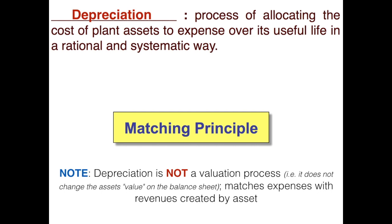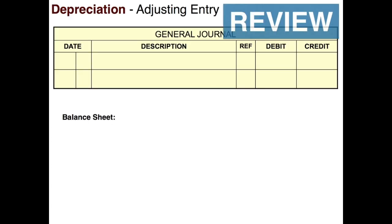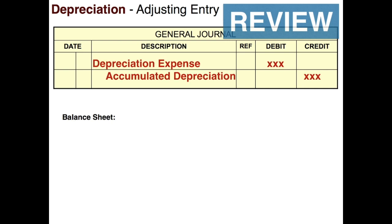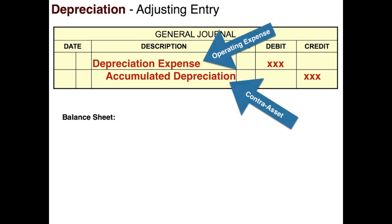Keep in mind that depreciation is not a valuation process — it doesn't actually change the asset's value on the balance sheet. Assets are kept on the books at what we paid for them; we don't adjust their value based on fair market value. The use of depreciation methods matches the expense with the revenue created by the asset. When we record depreciation it's an adjusting entry: we always debit depreciation expense and credit accumulated depreciation for the particular asset. Depreciation expense is an operating expense and accumulated depreciation is a contra asset account.